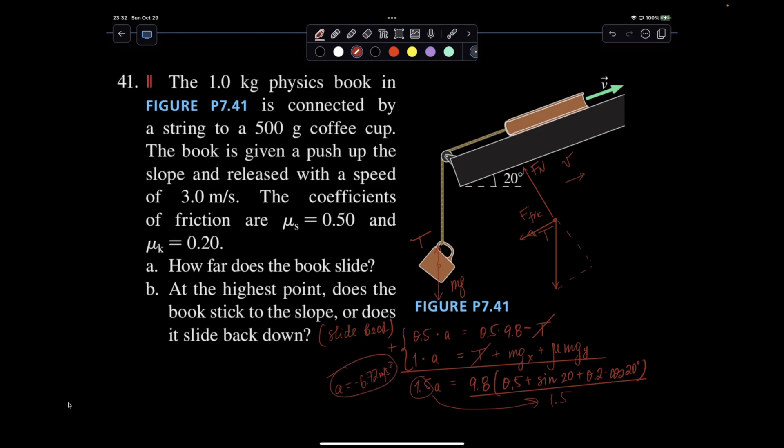I'm saying that it's negative because it's opposite to my velocity. From there, change in x is going to be 0 minus v initial squared over 2 accelerations. So negative 9 over negative 13.44, 0.67 meters. And that's how you answer the first question. 0.67 meters is how high this book is going to slide before it stops. And then it's just going to slide back down.